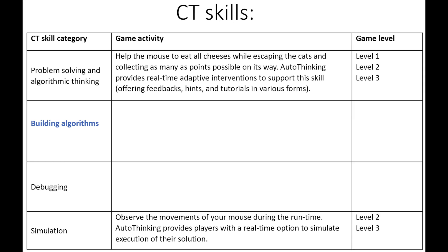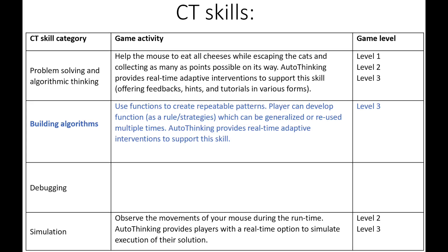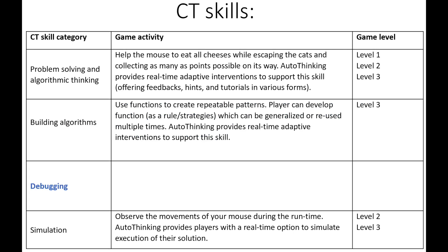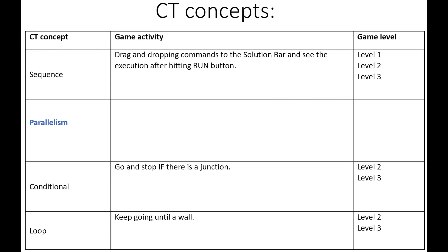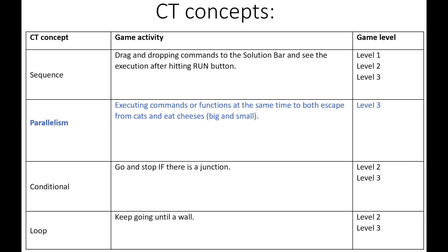Regarding the skills of computational thinking, an option to build functions is added in level 3. Building functions helps the player develop the skill of building algorithms, meaning creating repeatable strategies. Level 3 also has an option for debug, which helps the player monitor the solution algorithm to detect any potential errors in the logic. Finally, the last computational concept is parallelism — executing commands or functions at the same time to both escape from cats and eat cheeses.